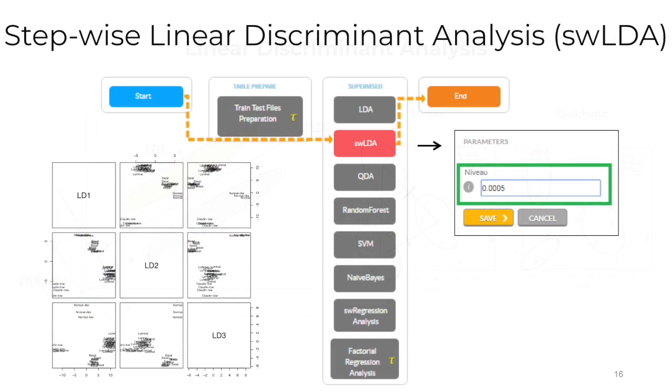Stepwise LDA makes it possible to automatically select those features in your data that are most useful or most relevant for the problem that you're working on. This is a process called feature selection. Feature selection is different from dimensionality reduction. Although both methods seek to reduce the number of attributes in the dataset, a dimensionality reduction method does so by creating new combinations of attributes. Feature selection methods include, as well as exclude, the attributes that are present in the data without actually changing them.